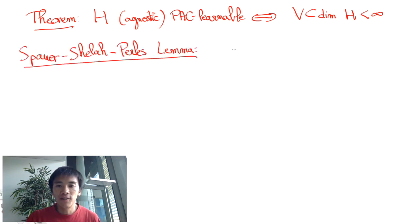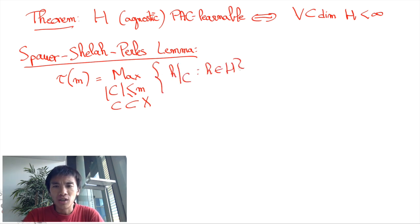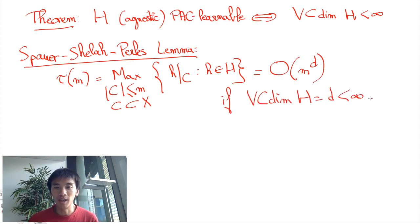It asserts that if the VC dimension is finite, then the number of restrictions of hypothesis of H to subsets of size M, which we shall call tau of M, grows polynomially with M. This is really a remarkable, lovely lemma.